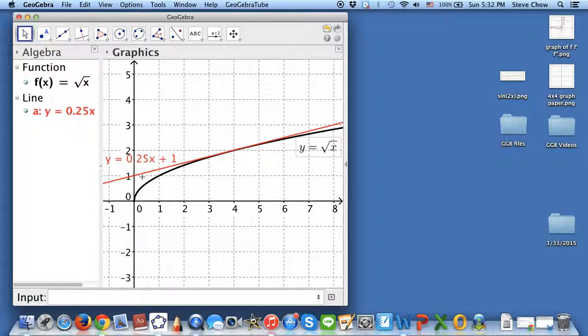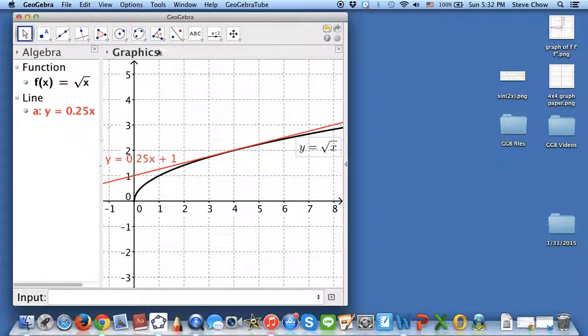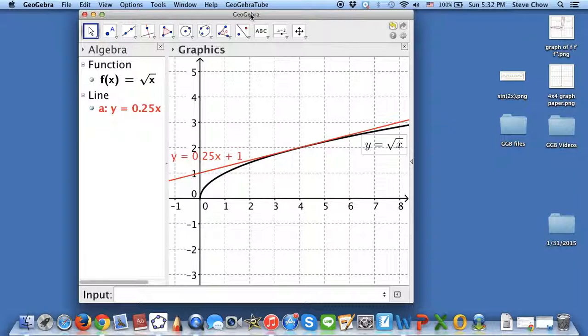And this is the equation of the line, tangent to square root of x when x is equal to 4. And this is the line, and I'll show you the formula right here. And this is 1 fourth x plus 1. And that's it, right? You can have GeoGebra graph tangent line for you. So this is going to be really useful in calculus.